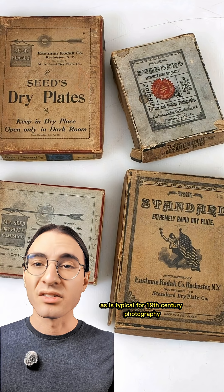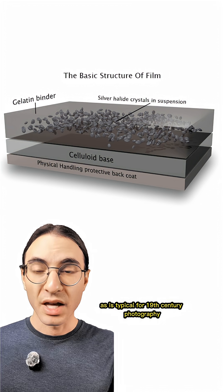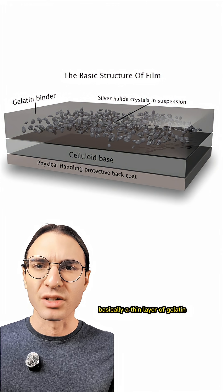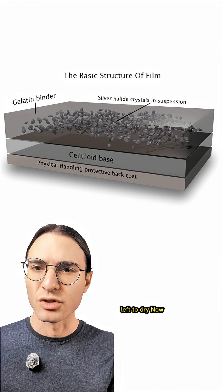So it starts with a glass plate, as is typical for 19th century photography. And on that plate, one paints an ultra-fine grain light-sensitive film on it, basically a thin layer of gelatin with silver halide particles suspended in it left to dry.